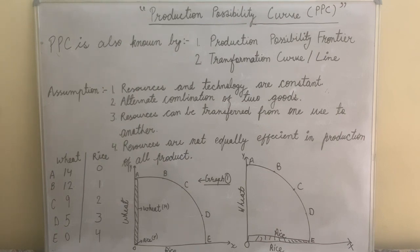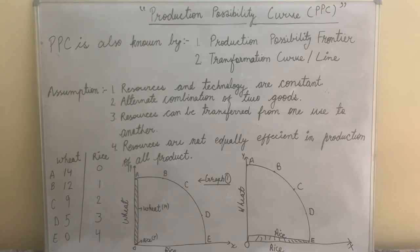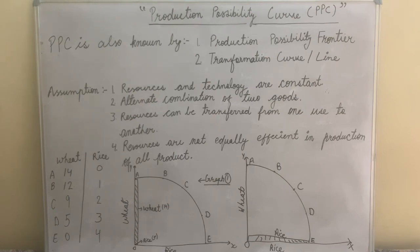The assumptions of PPC are: first, resources and technology are constant at a given time. Second, there are alternate combinations of two goods — wheat and rice. Third, resources can be transferred from one use to another — we are transferring resources from wheat production to rice production.